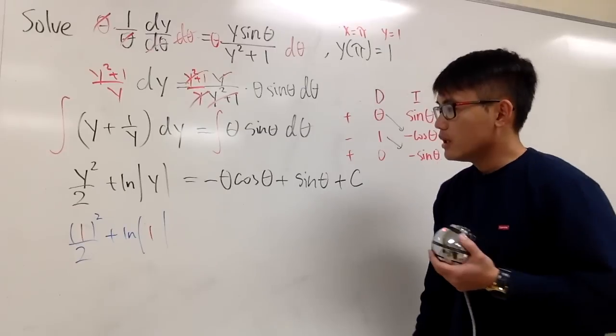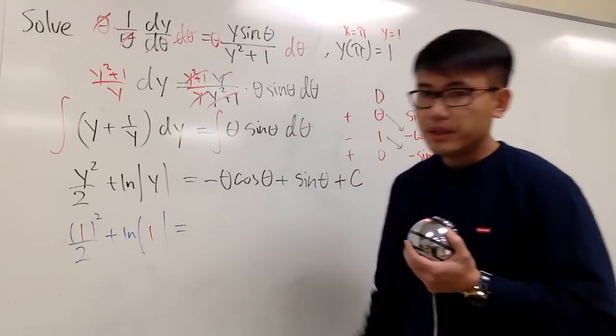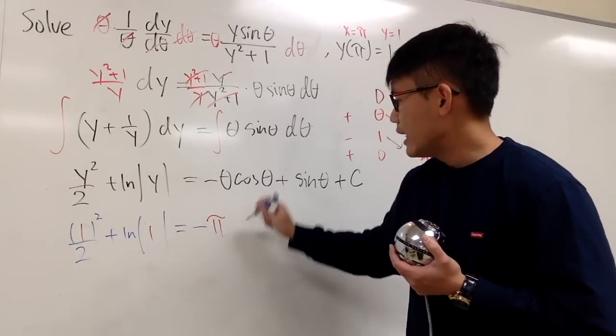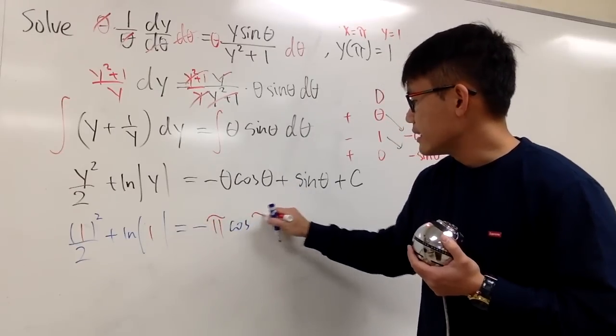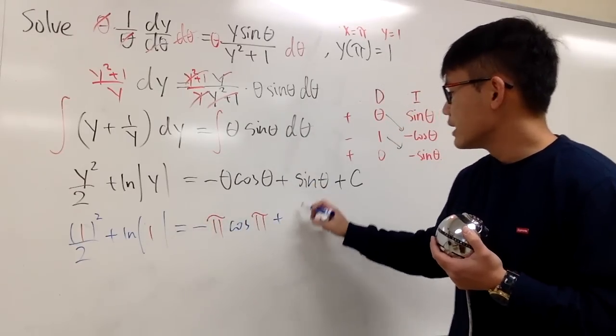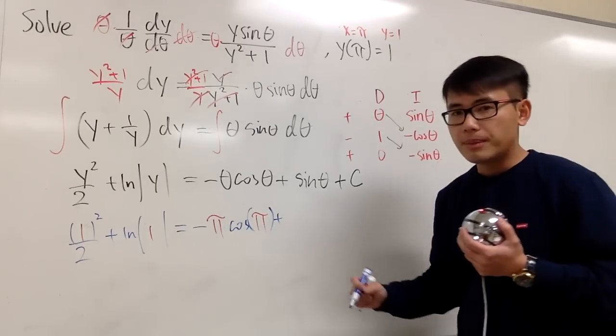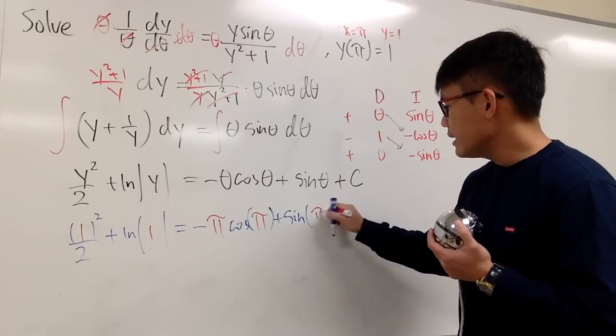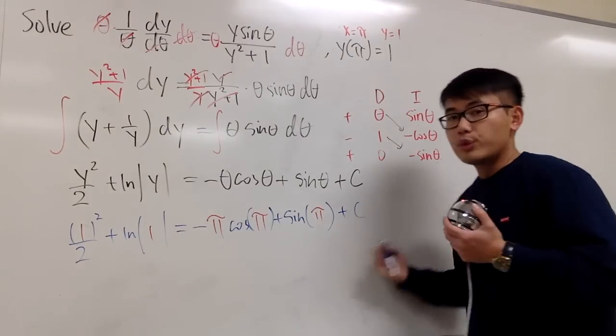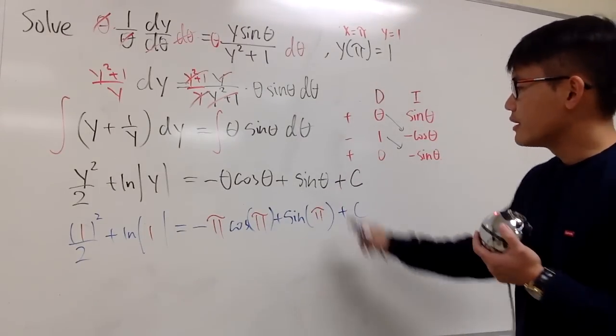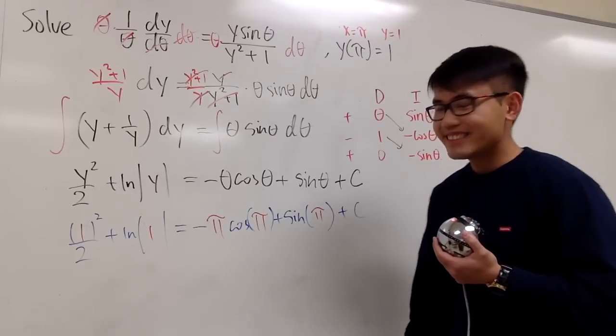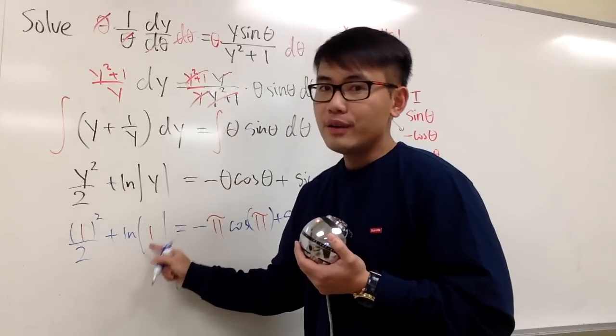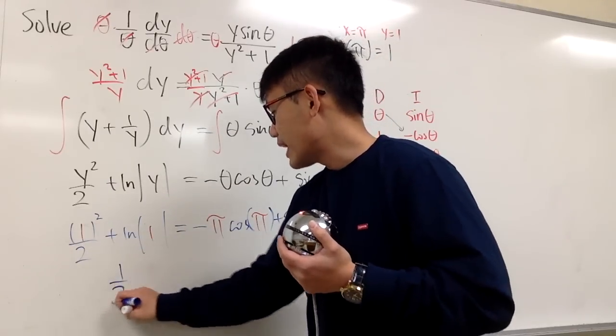And this is going to be, we have negative, theta is pi, and then we have cosine, and theta is pi, and then we add it with, and let me put a parenthesis around the pi. And then, right here, we have sine of theta is pi, and then we add a C after that. The C is all the way at the end. It's not inside of any of the sine or cosine functions. 1 squared is 1, divided by 2 is just 1 half. Ln of 1 is 0, so on the left-hand side, we have 1 half.